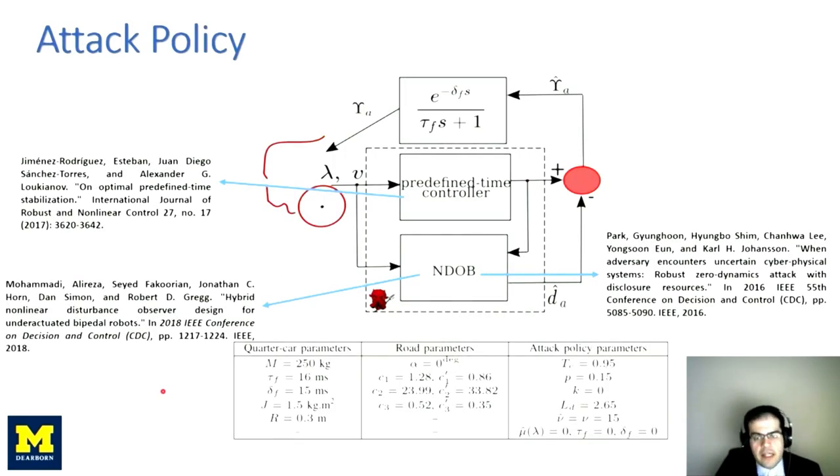Okay, so our attack policy has got two main components, and the detailed mathematical expressions can be found in the accompanying paper. Basically, we have got a predefined time controller that, under a perfect knowledge of the vehicle dynamics, will guarantee that the states will converge to the lockup manifold in any finite time that is desired by the adversary. Now, this controller was originally proposed by Jimenez Rodriguez and his collaborators, and the second component of the attack policy is a non-linear disturbance observer that compensates for the lack of adversarial knowledge about the dynamics of the vehicle and the tire-road interaction characteristics. And this compensation comes through a feed-forward compensatory action that comes to the assistance of the output of the predefined time controller.